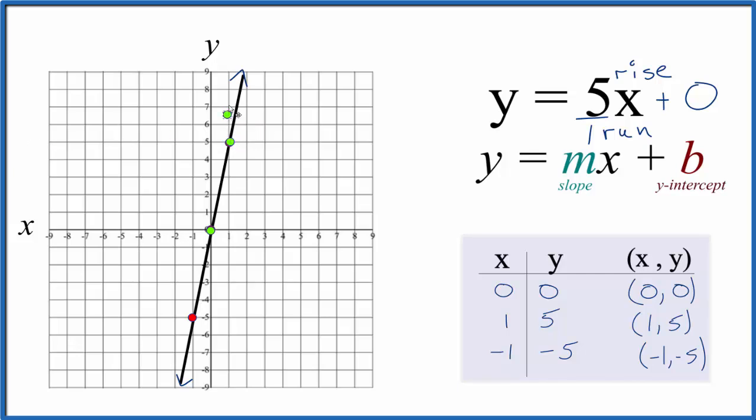We could do the same here. 1, 2, 3, 4, 5, and over 1, rise over run. And we can go the opposite direction, down 5 and over 1. Do it again, down 5 and over 1.